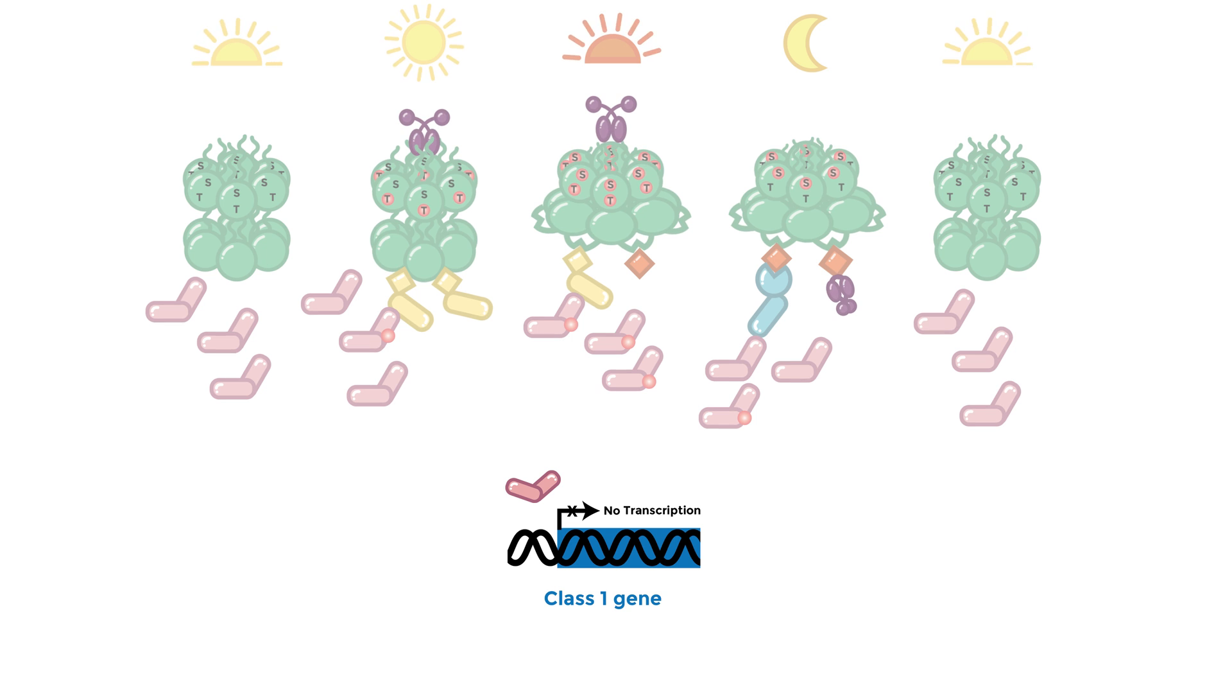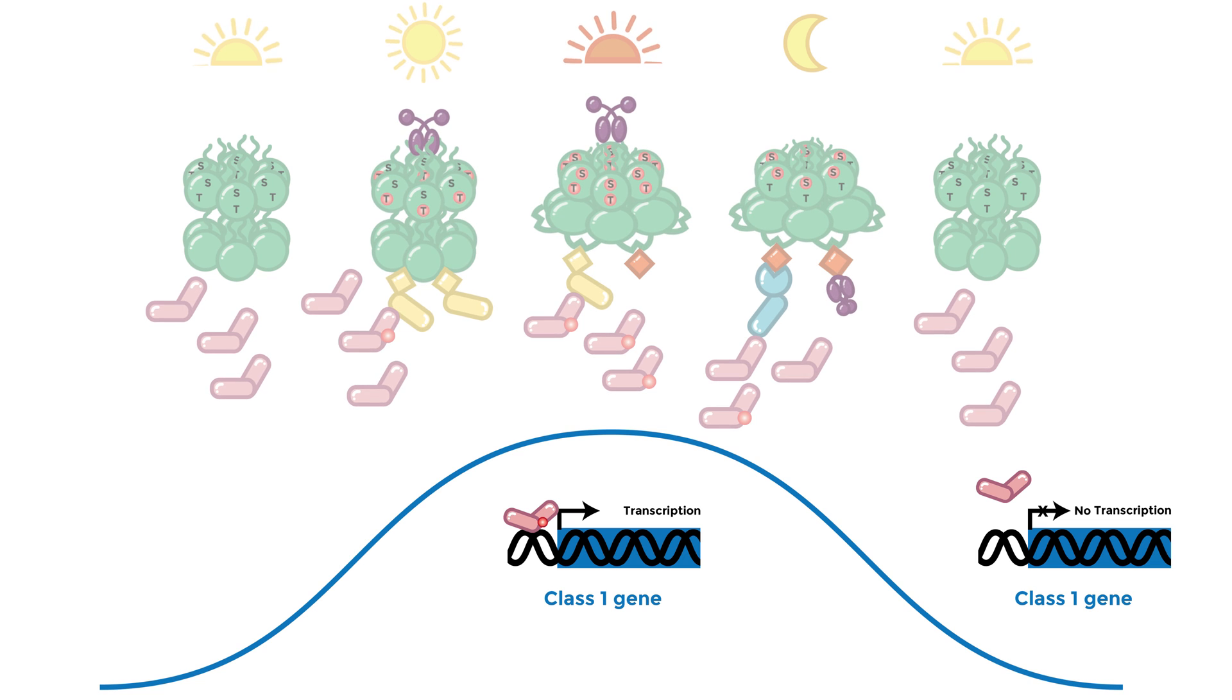The oscillation of phosphorylated RpaA, low at dawn and high at dusk, creates rhythmic expression of class 1 genes that peak at dusk.